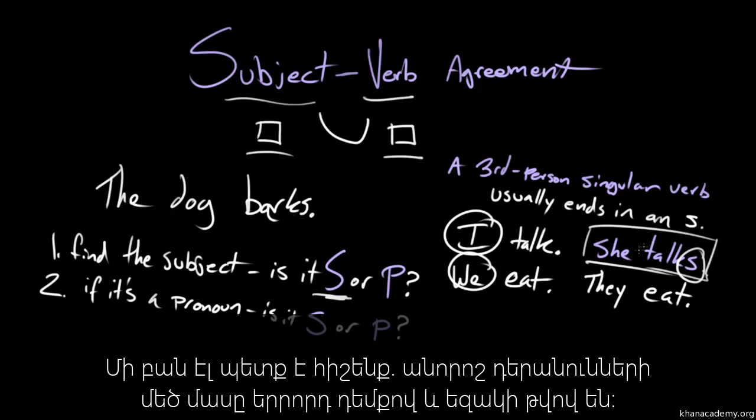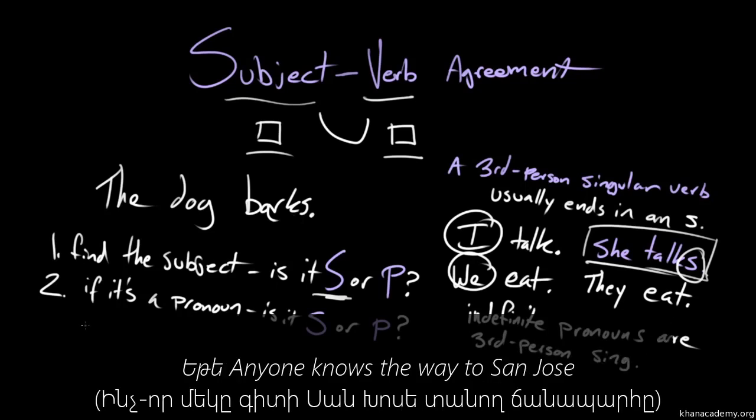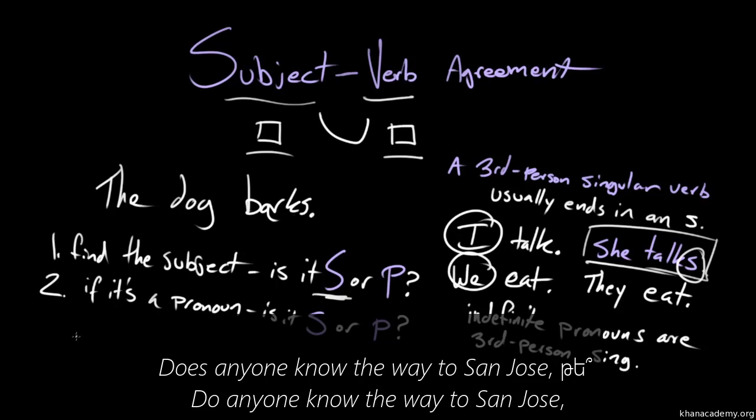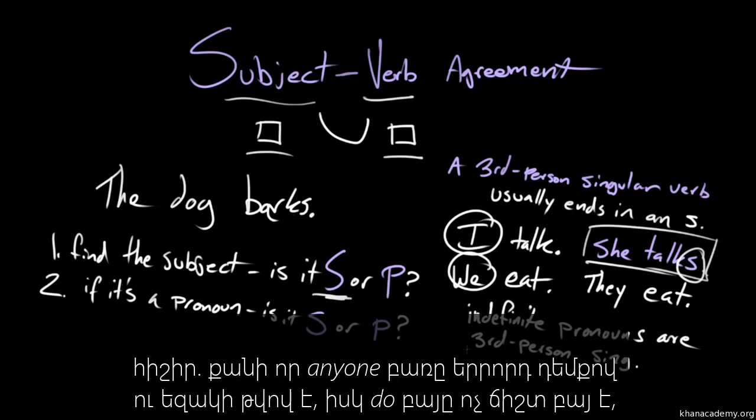Another thing to remember is that most what we call indefinite pronouns are third person singular. So if you wanted to ask whether or not anyone knows the way to San Jose as a question, but you're not sure whether or not it would be does anyone know the way to San Jose or do anyone know the way to San Jose? Well, the word anyone is third person singular.